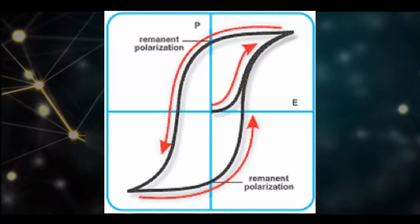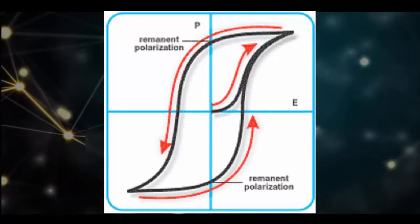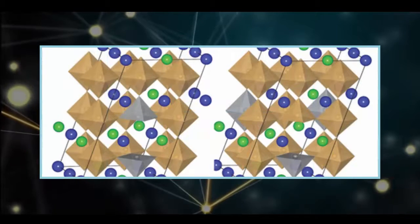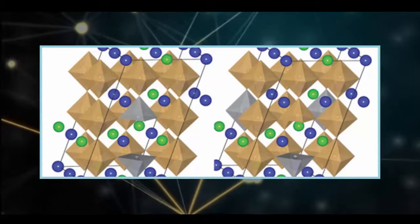Similarly, when ferroelectric materials experience changes in temperature, their dipoles misalign, and this triggers an electric current. This property is known as pyroelectricity.